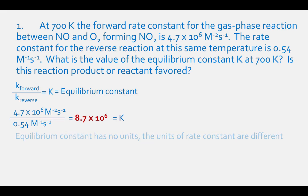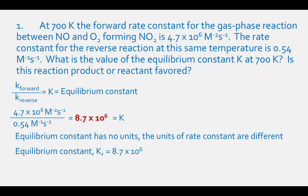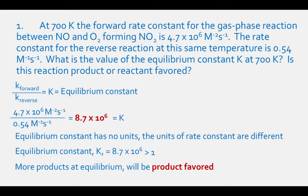Since it is an equilibrium constant, it will have no units, even though the units of the rate constants are different. To answer whether the reaction is product or reactant favored, look at the value of K we just calculated — it is much greater than 1. Therefore, we will have more products at equilibrium and the reaction will be product favored.